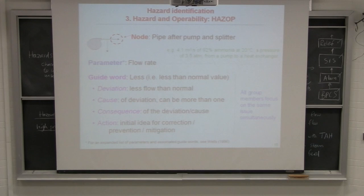So there's a whole table of guide words here on the next page. No or none, more or less, as well as reverse, other than. So not all of these make sense for flow, but one that does make sense for flow is less. More, no, reverse, those four make sense for flow. We're going to start with less flow. And once you've selected your node, parameter, and guide word, then we always look at this sequence shown here by the bullet points. So if your deviation is less flow than normal, what might cause that?